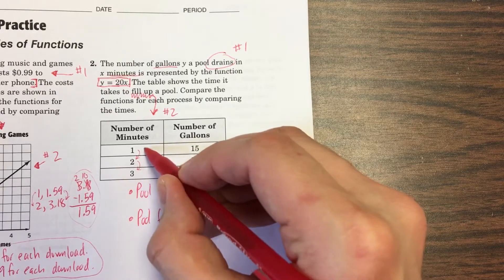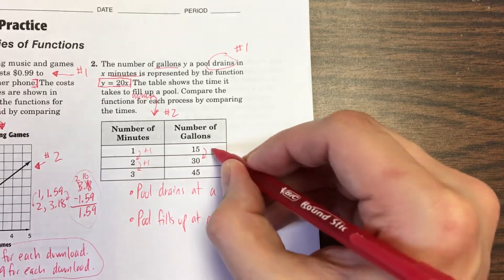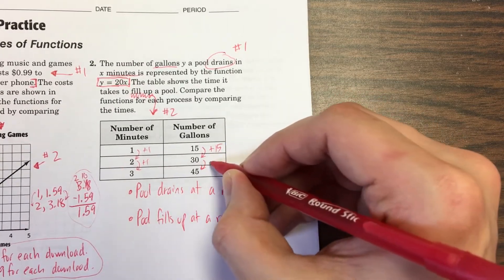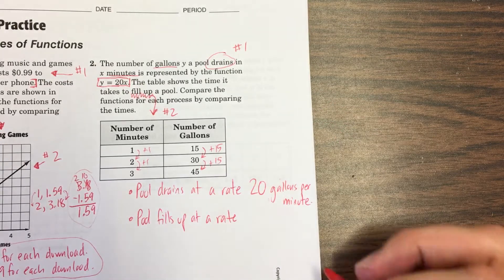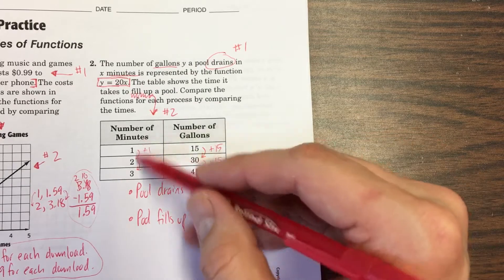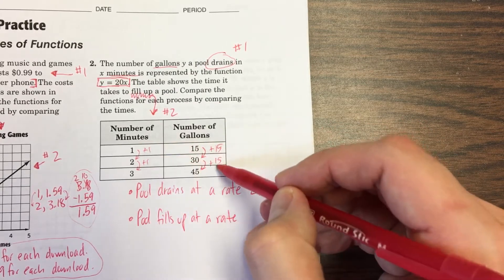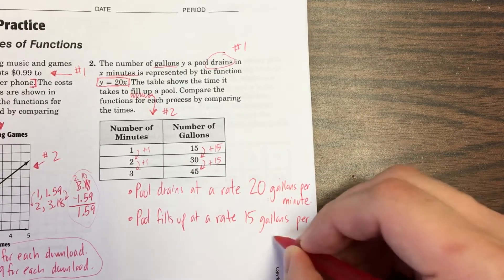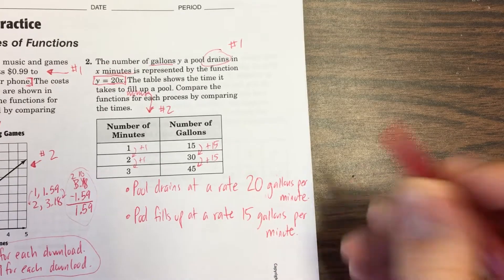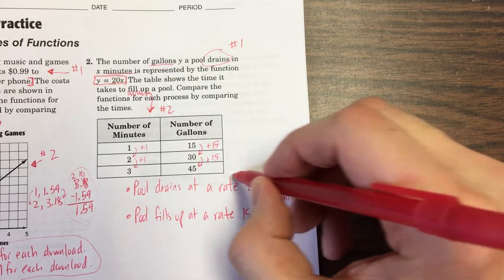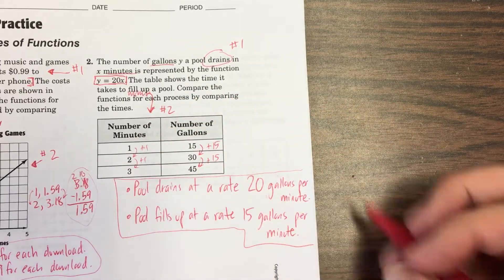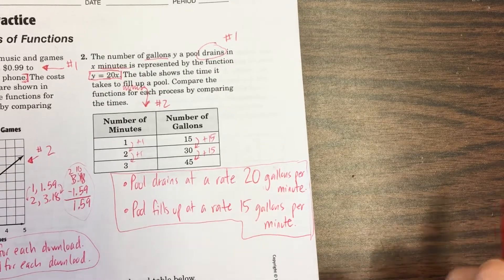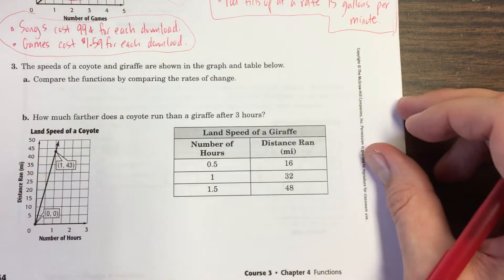Now number two, situation number two, the table is filling it up. So we can say the pool fills up at a rate. Now we're going to have to figure out the rate on this one. It's in the chart. So the minutes are increasing by one, plus one, plus one. The gallons are increasing by 15. From 15 to 30 is adding 15, from 30 to 45 is also adding 15. So 15 gallons every minute. So that's going to be what I used on here. That is the slope. That is the rate of change. Later on, they might ask you to compare the rates of change. Compare the slopes. There it is. 20 gallons per minute and 15 gallons per minute. So we can drain the pool a lot faster than we can fill it up.